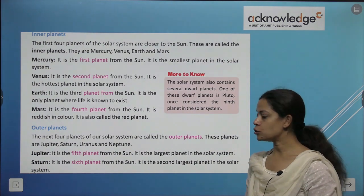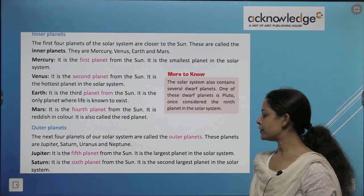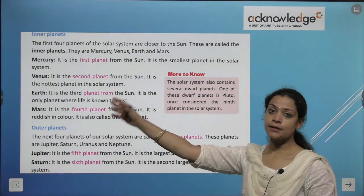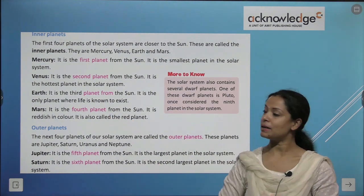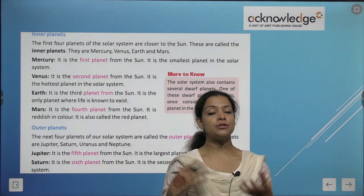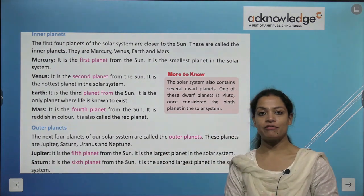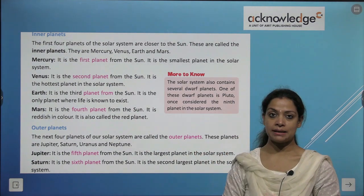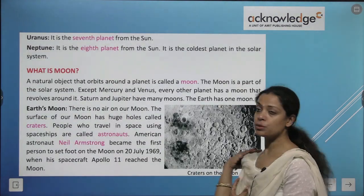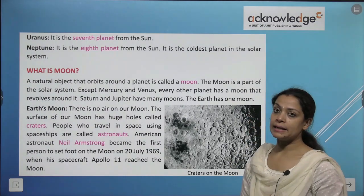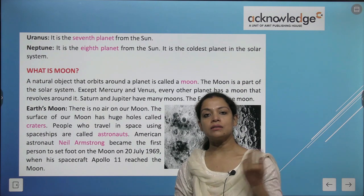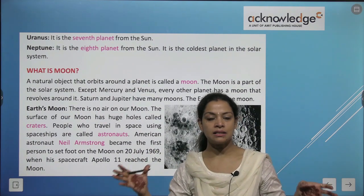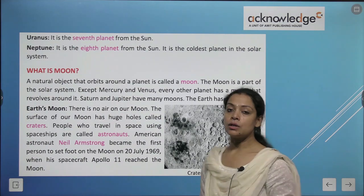Jupiter is the fifth planet from the sun and is the largest planet in the solar system. Saturn is the sixth planet and the second largest. Uranus is the seventh planet. Neptune is the eighth planet and the coldest planet because it is the farthest from the sun. Quick recap: largest planet is Jupiter, smallest is Mercury, hottest is Venus, red planet is Mars, and the planet with life is Earth.